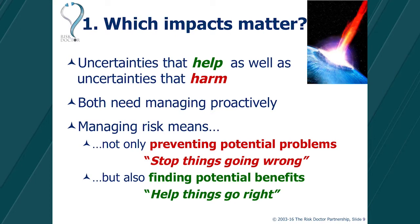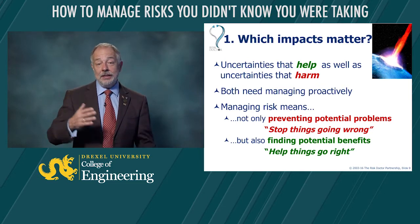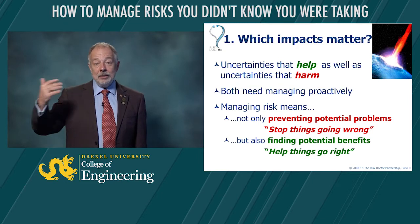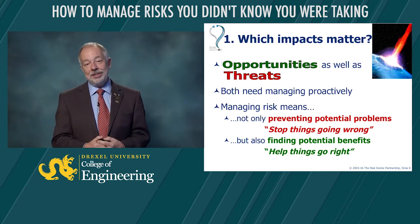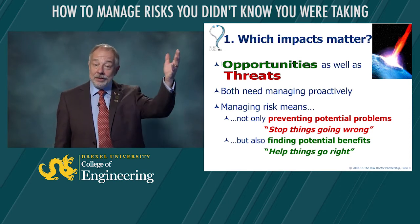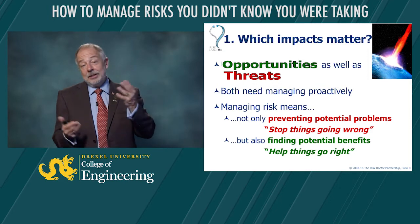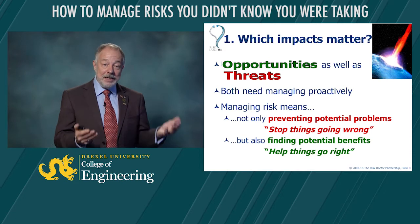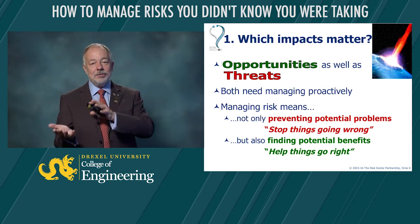It needs to deal with uncertainties that harm us — preventing potential problems, stopping things going wrong. But we also need to be looking for ways that things could go better than planned, finding potential benefits, ways to work faster, smarter, or cheaper, in addition to finding things that might make us work slower and more expensively. Both of these things are important. We use the words opportunity and threat to describe the two types of uncertainty that matter. Opportunities may never happen; they are out there in the future, but if they do happen, they matter because they help us save time and save money. Both opportunities and threats are types of risk, and risk management should deal with both of them.